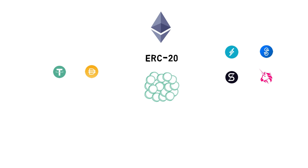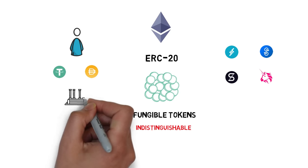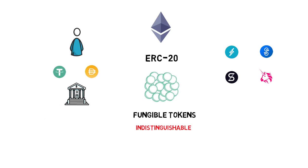ERC20 allows for creating fungible tokens. So all of the tokens just mentioned are completely indistinguishable and it doesn't matter if we receive USDT from our friend or from one of the exchanges — the value of each token is still the same. We are skipping the possibility of receiving tainted tokens that would actually make a difference between tokens, making them less fungible.